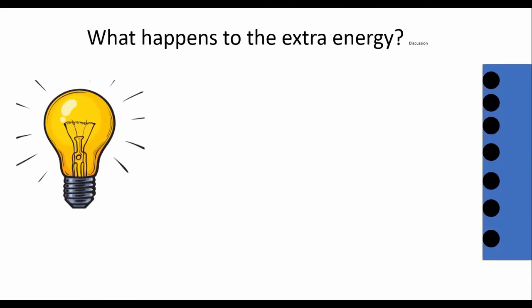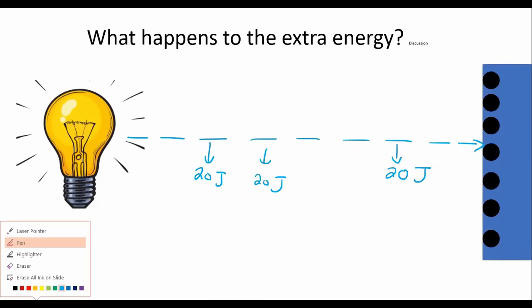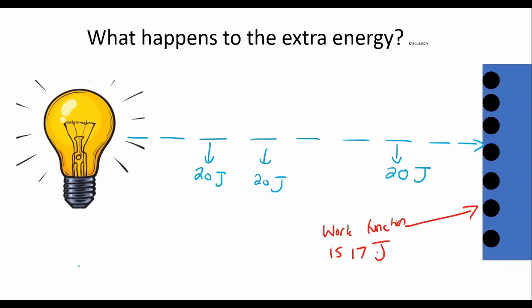Let's say we've got energy coming in from this light, and let's say that the energy of every single photon is 20 joules. So that means that this one has 20 joules, this one has 20 joules, this one has 20 joules. They all have 20 joules. Now let's say that the work function... If the work function is 17, then can you guys see that an electron will be released from the metal?